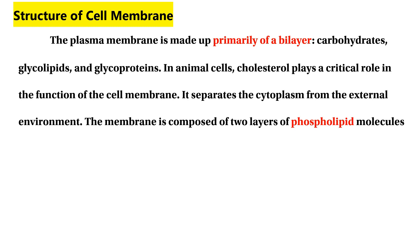Animal cells contain cholesterol. Selectively permeable means that water-soluble and fat-soluble substances are selected. The plasma membrane has a variable protein-to-phospholipid ratio. The membrane contains phospholipid proteins. The membrane contains two layers of phospholipids, and we can change a phospholipid using a polar hydrophilic head.